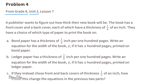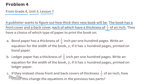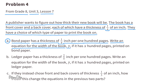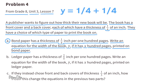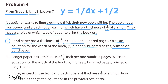Problem 4 from 8th grade, Unit 3, Lesson 7. A publisher wants to figure out how thick their new book will be. The book has a front cover and back cover, each with a thickness of 1/4 of an inch. Part A: Bond paper has a thickness of 1/4 inch per 100 pages. The front and back covers together contribute 1/2 inch. Since bond paper is 1/4 inch per 100 pages, the equation is y equals 1/4 x plus 1/2.